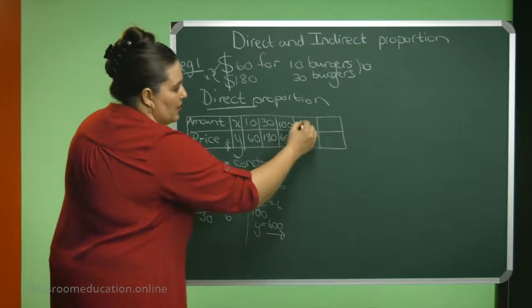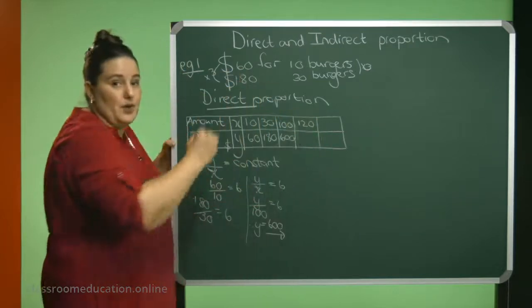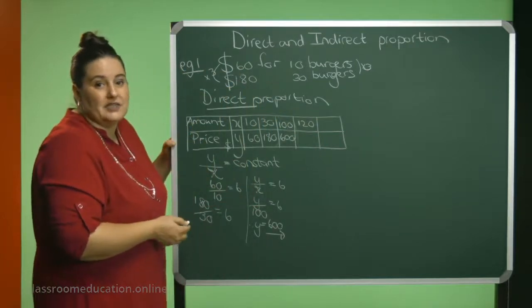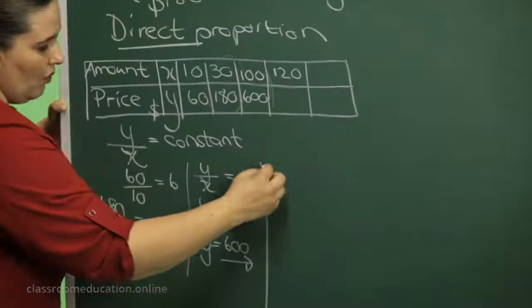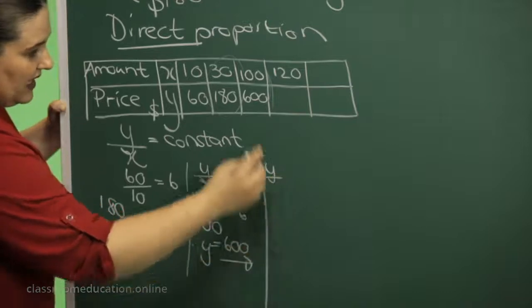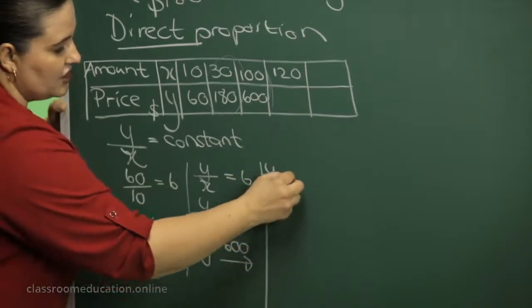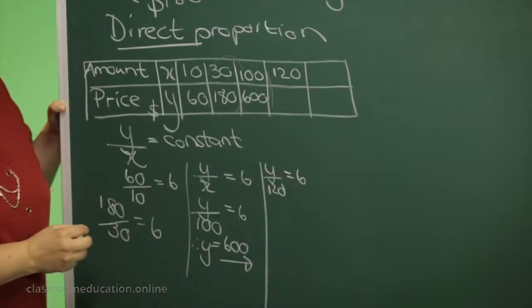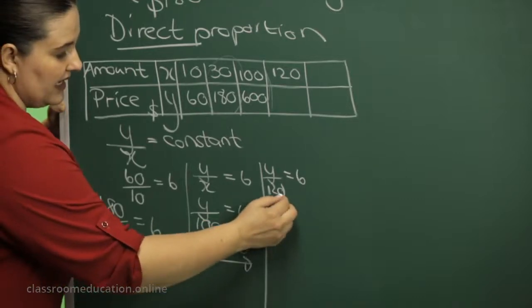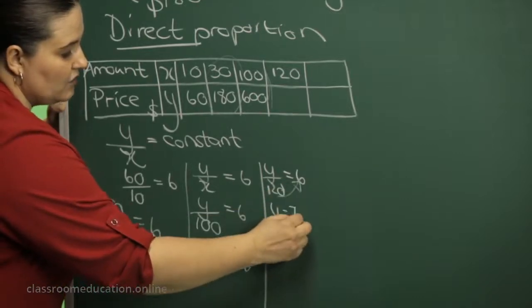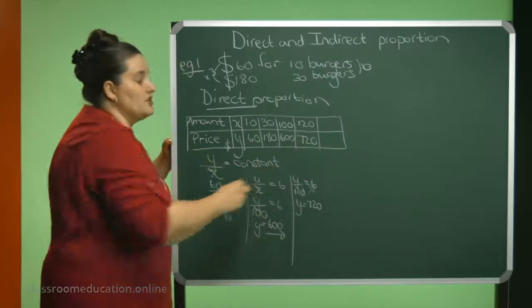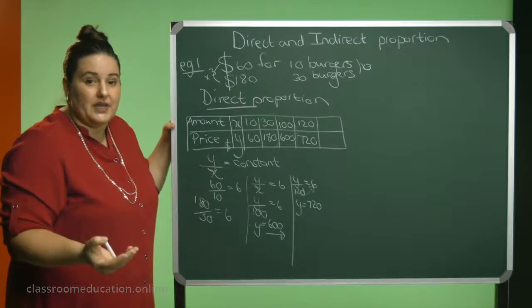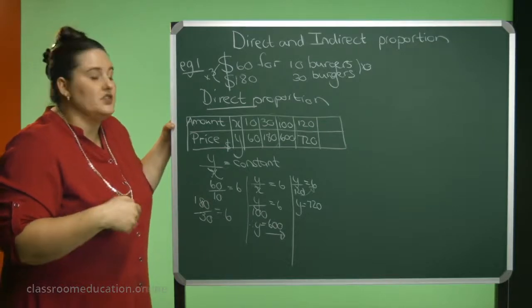Let's say you want to buy 120 burgers. What will the price be? Let's quickly work it out. So I will have Y divided by 120 should give me an answer of 6. So to get the Y alone, I can say 120 times 6, that will be 720. So if you would like to buy 120 burgers, you need to pay $720.